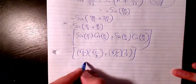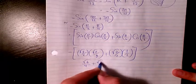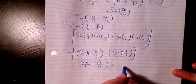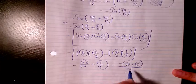It's going to be root 6 divided by 4 plus root 2 divided by 4. And we have a negative sign there. So we have negative root 6 plus root 2 divided by 4.